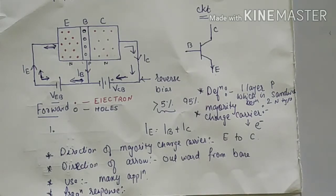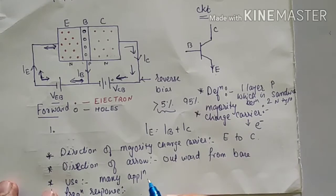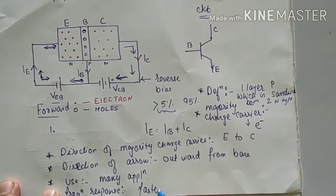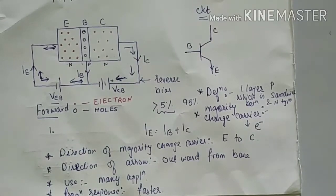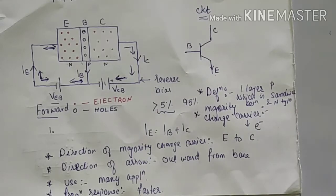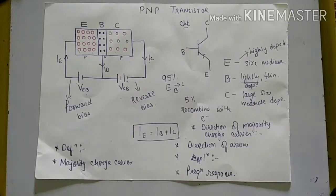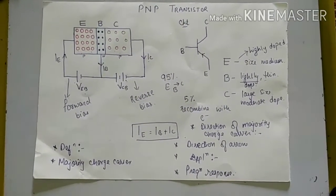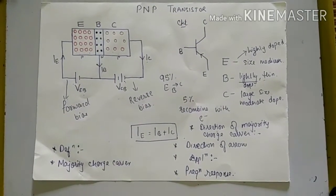What is the frequency response of the NPN transistor? The NPN transistor's frequency response is faster than PNP transistor. Now moving to the second part, the PNP transistor, which shares the same six comparison points.